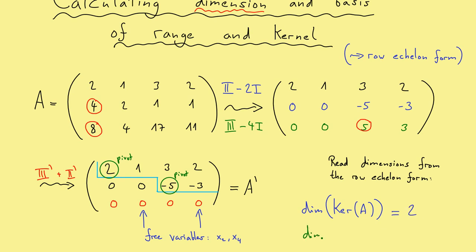Now the only thing missing is the dimension of our range, or the image of our matrix A. If you remember the rank-nullity theorem, it tells you that if you add up these two dimensions, you get the dimension of the space you put in — or using matrix language, the number of columns. Therefore you can also immediately read the dimension of the range from the row echelon form: it's the number of pivots. Hence, in this case, also 2. This was the first step — finding the dimension of the range and the dimension of the kernel.